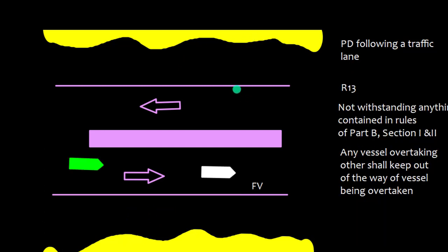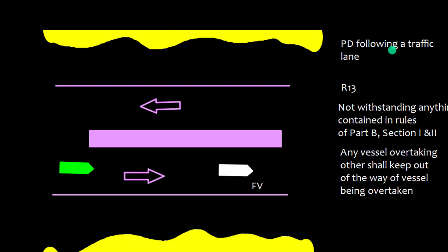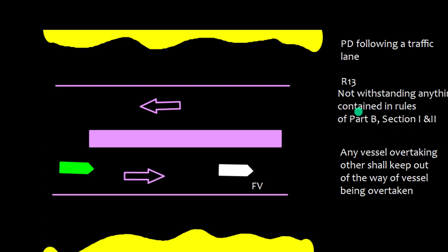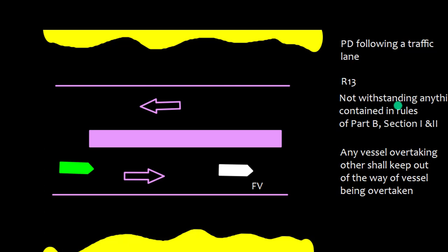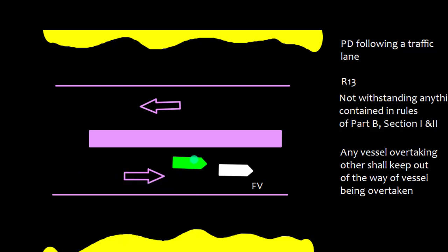If a fishing vessel is fishing but following the appropriate traffic lane and you are a power-driven vessel also following the same lane and overtaking, Rule 13 applies — notwithstanding anything in Part B Sections 1 and 2, any vessel overtaking another shall keep out of the way. As the overtaking vessel, it is your responsibility to keep clear. You may pass on either side but must do so carefully while keeping clear of the fishing vessel.